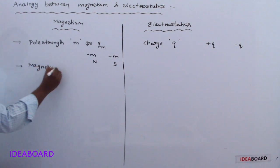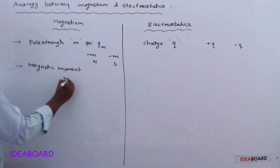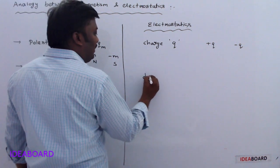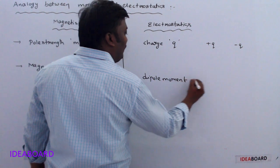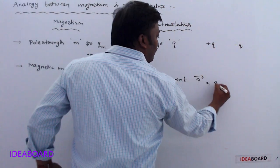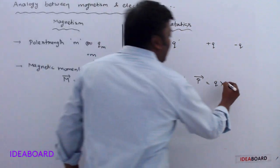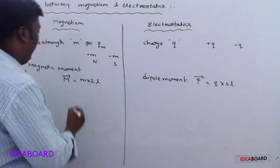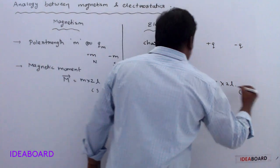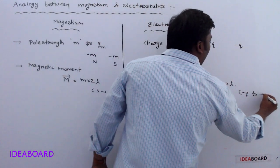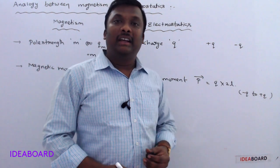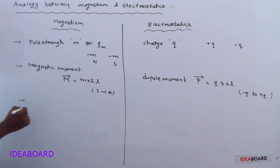Second, in magnetism we use magnetic moment. The symbol is M-bar, equal to small m into dipole length 2L. The analogous quantity in electrostatics is electric dipole moment P-bar = Q × 2L. The direction of magnetic moment is from south to north pole of the magnet; similarly, the direction of electric dipole moment is from negative charge to positive charge.